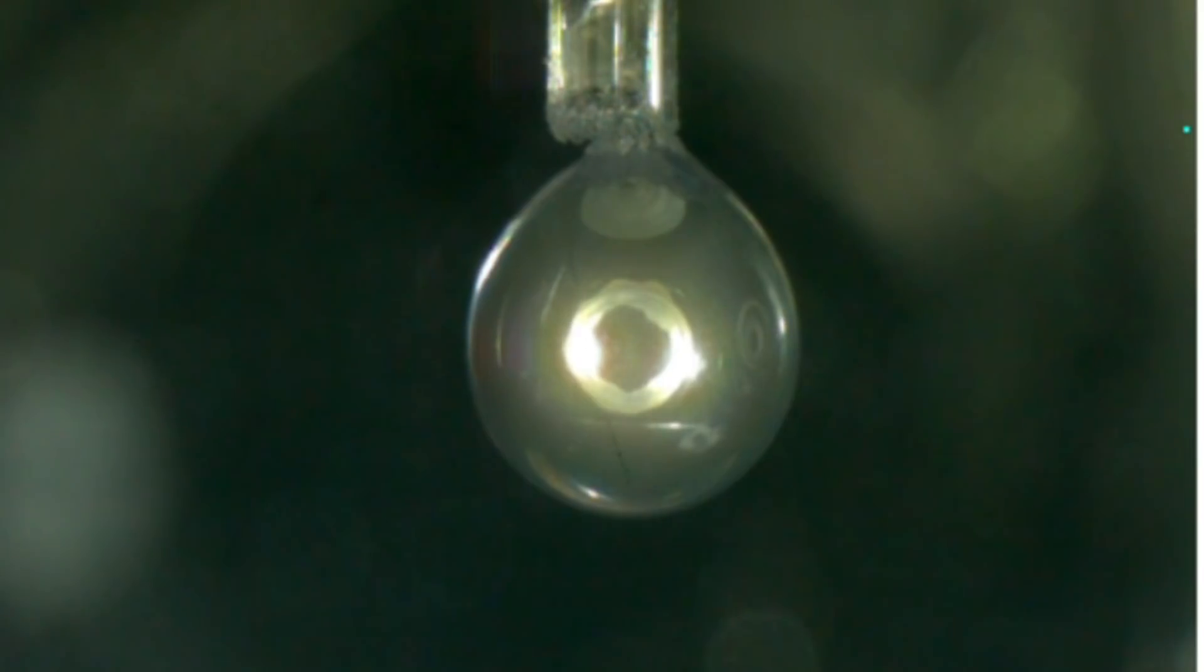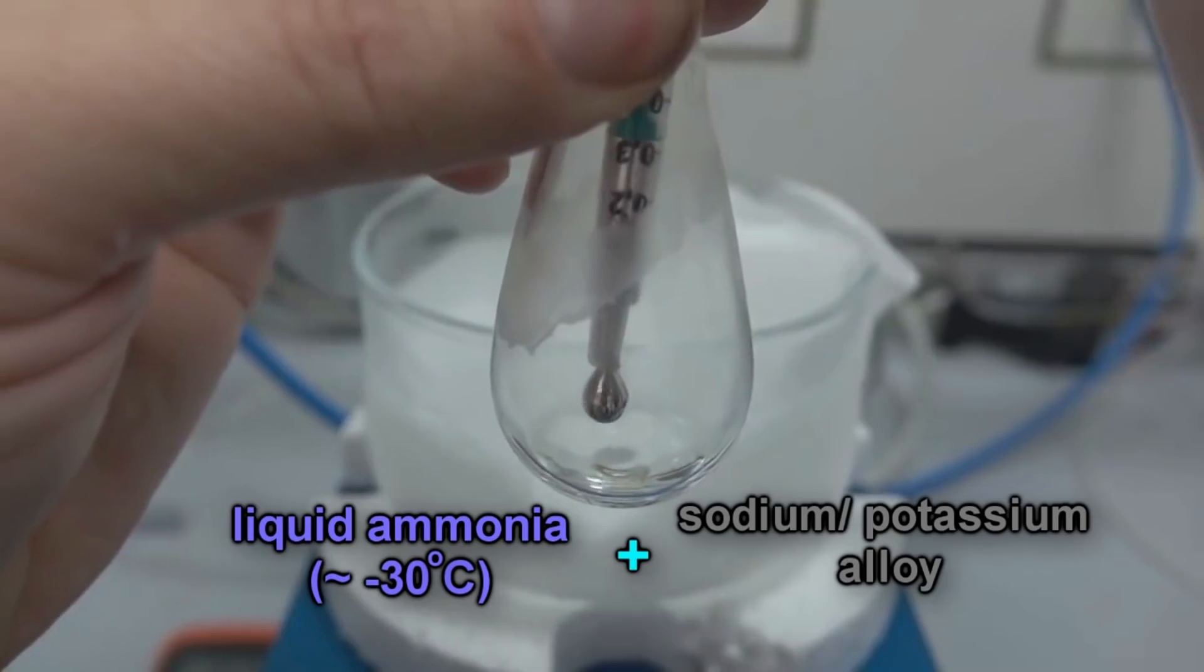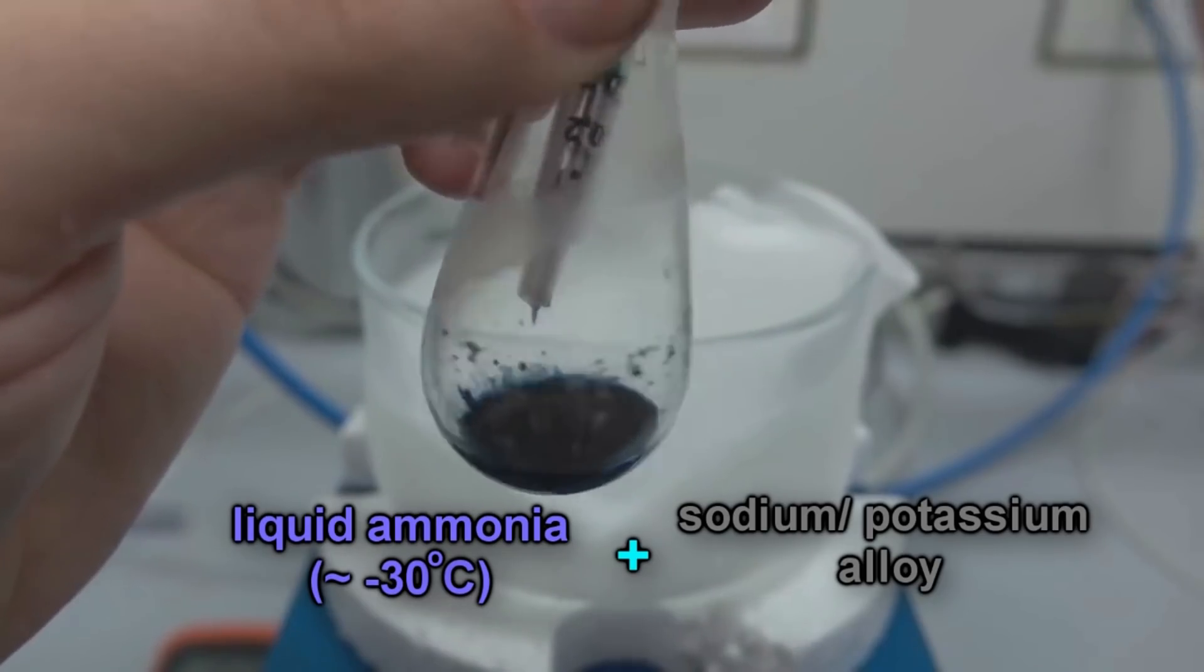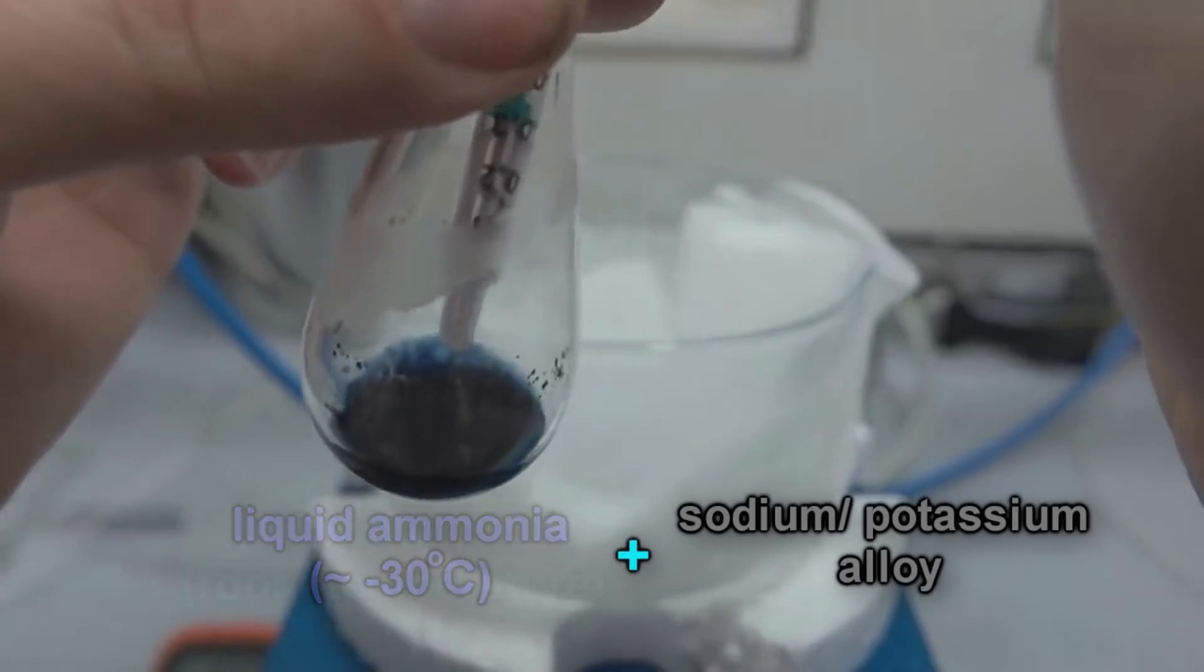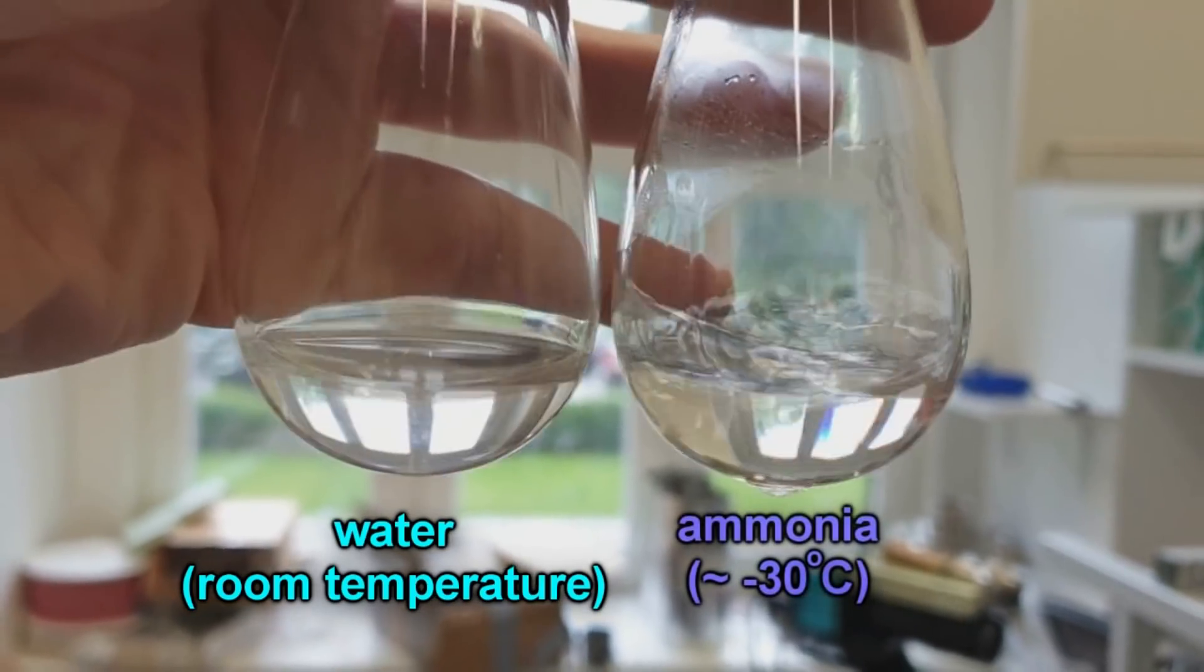Well, metals don't typically dissolve in most liquids, but some do. Alkali metals will dissolve in liquid ammonia, which starts at about minus 30 degrees Celsius.